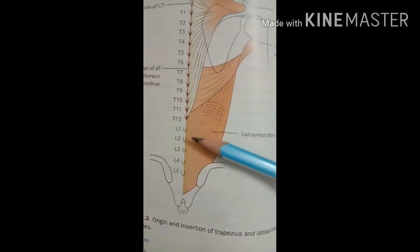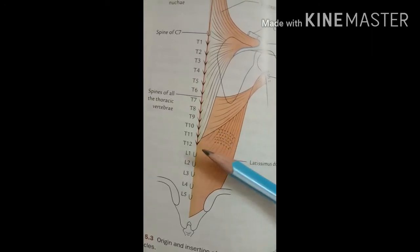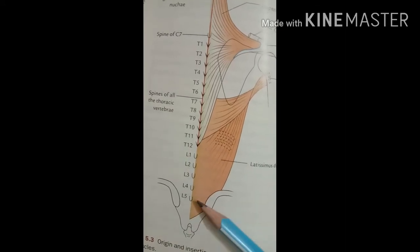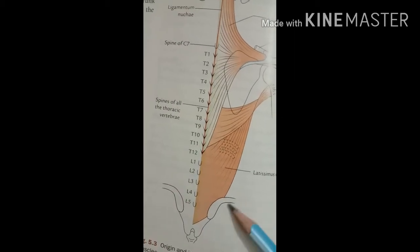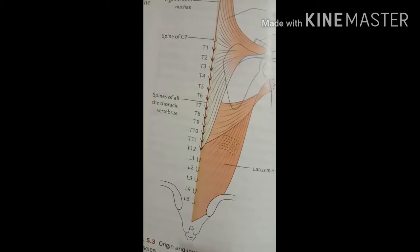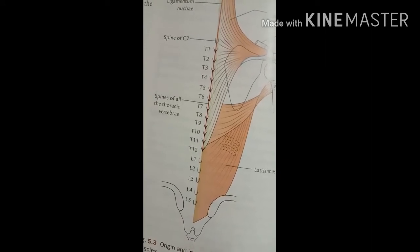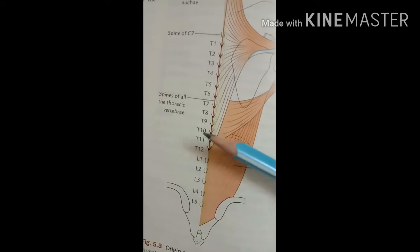The next muscle is the latissimus dorsi — also a large muscle. The origin of this muscle is from the posterior one-third of the outer lip of the iliac crest, the posterior layer of the lumbar fascia, and the spine from T7 to T12.